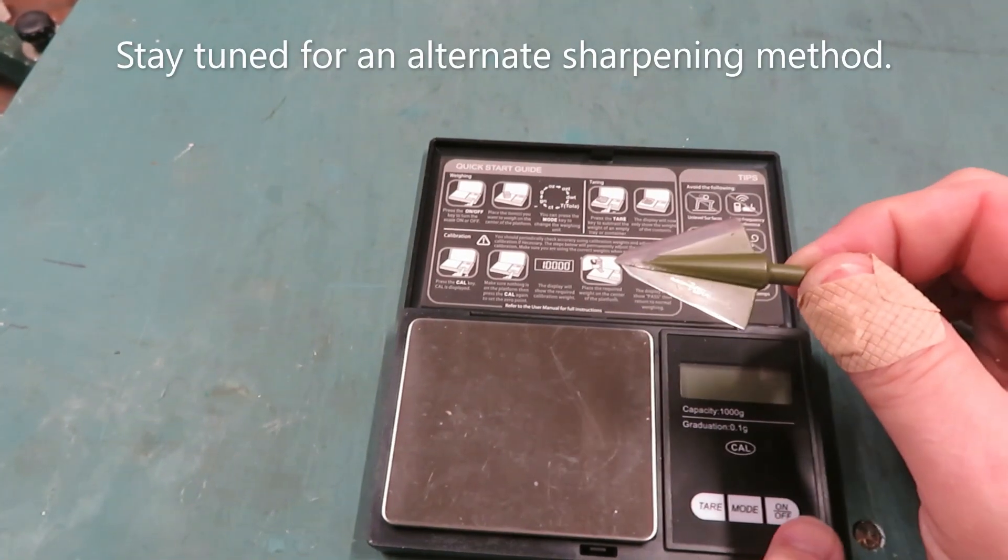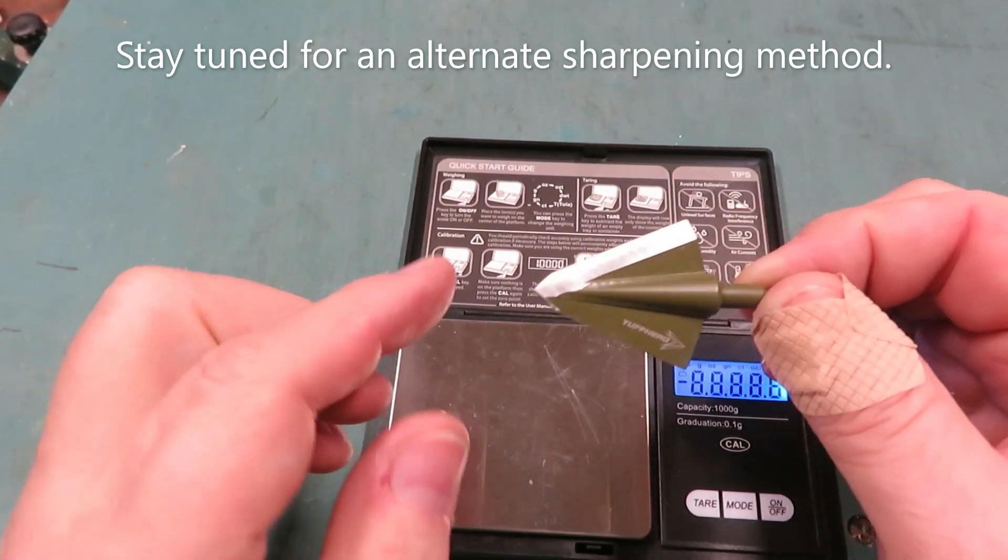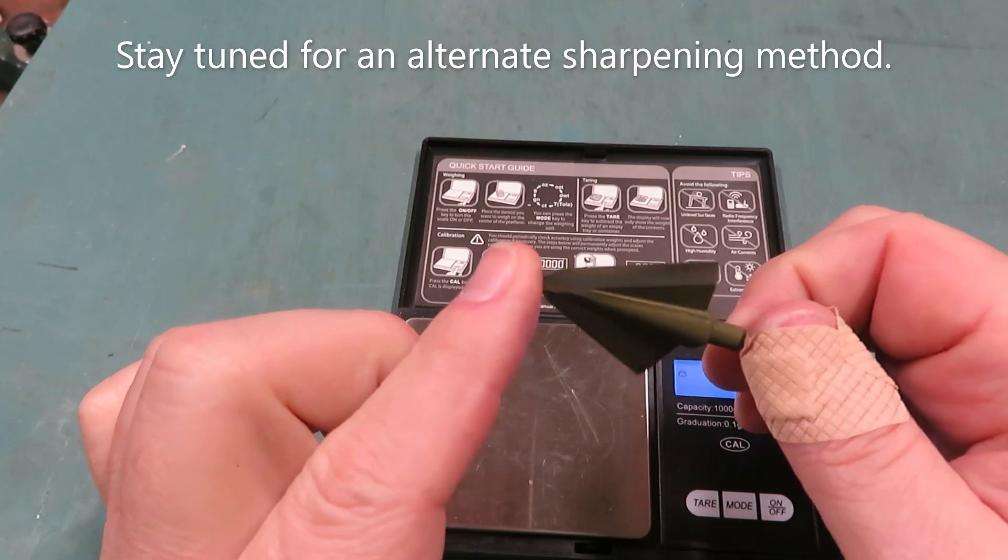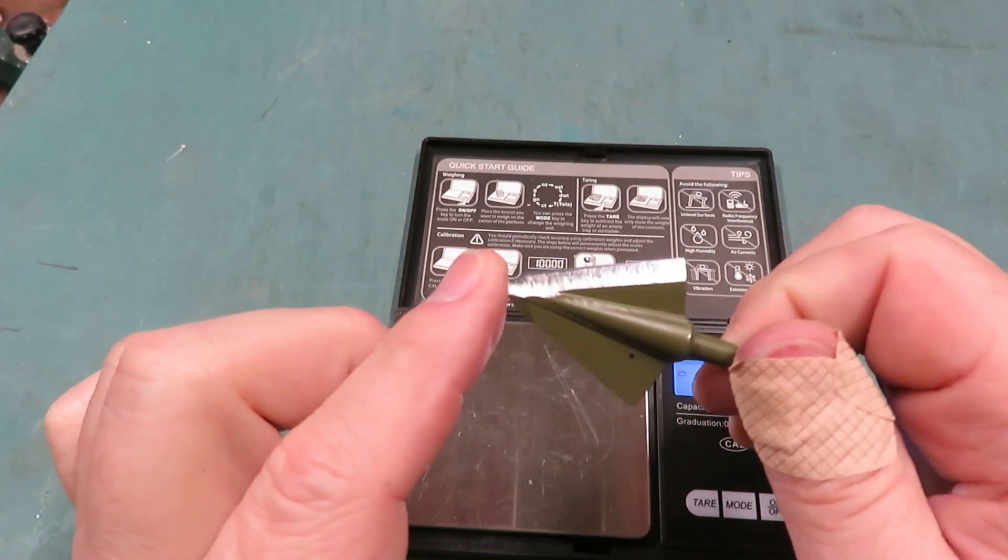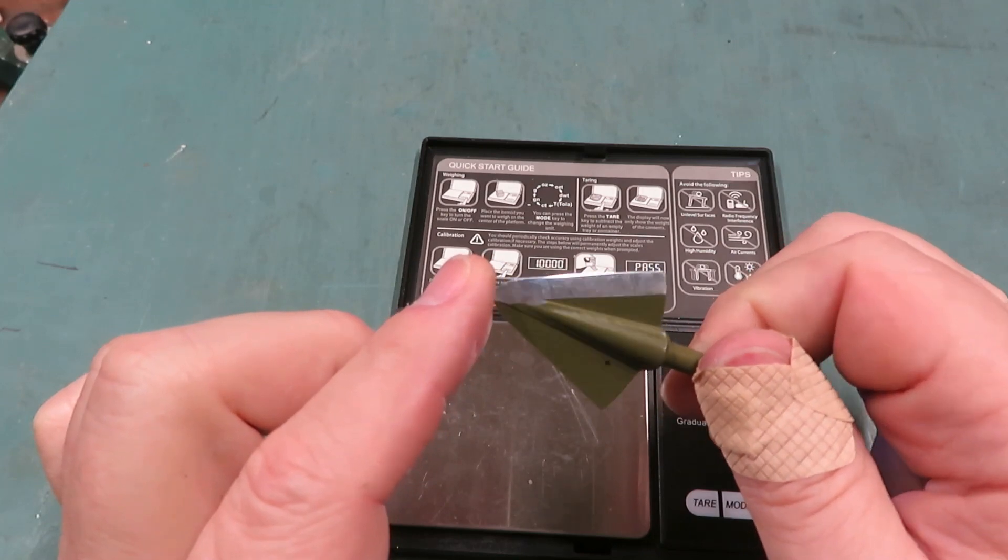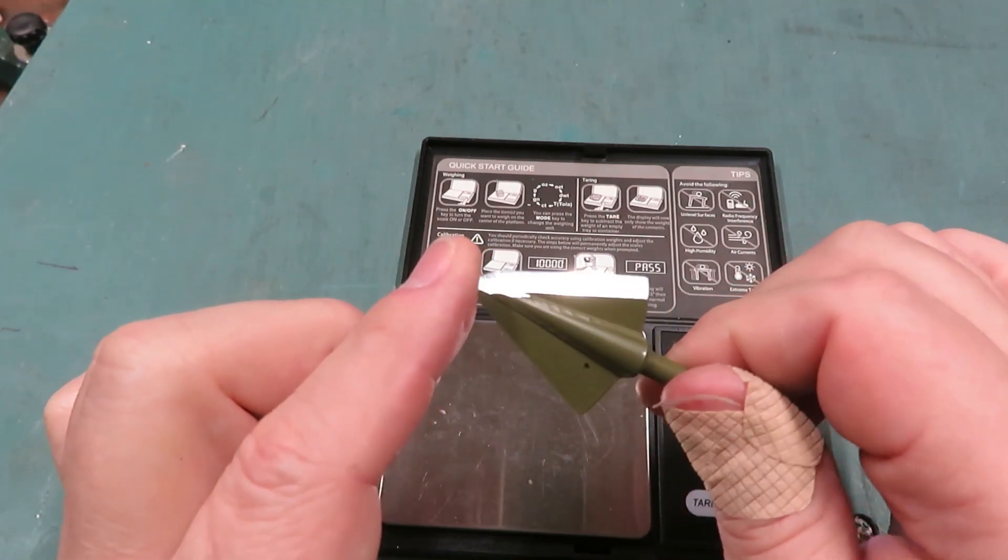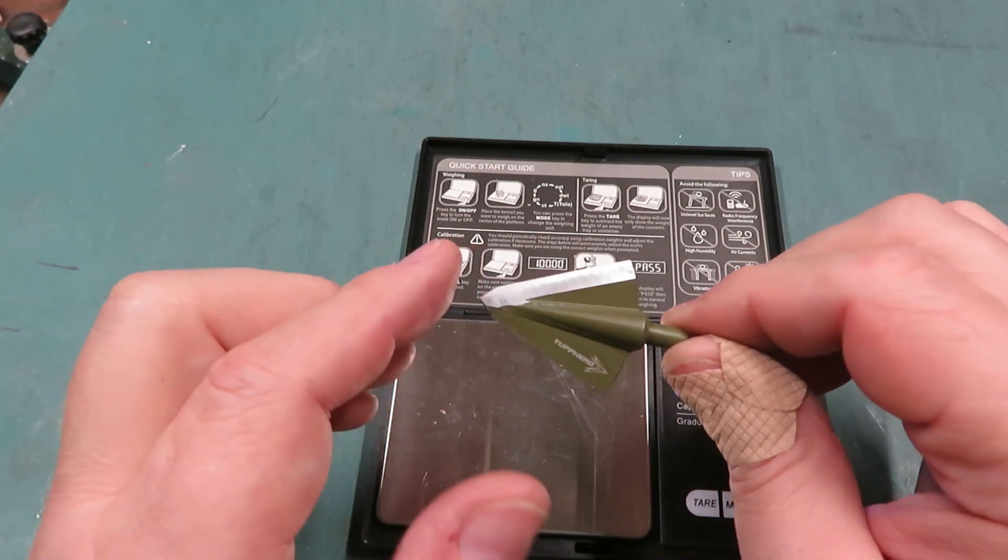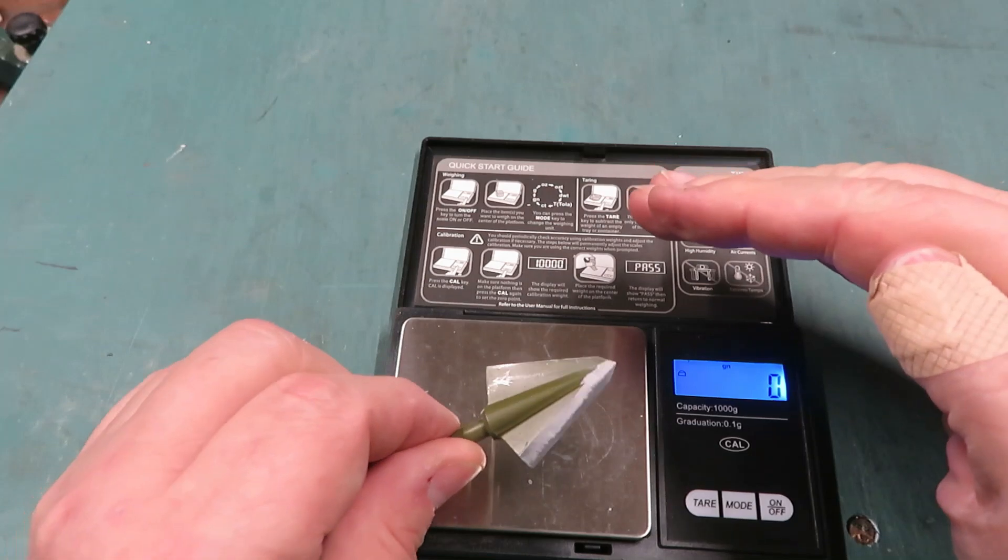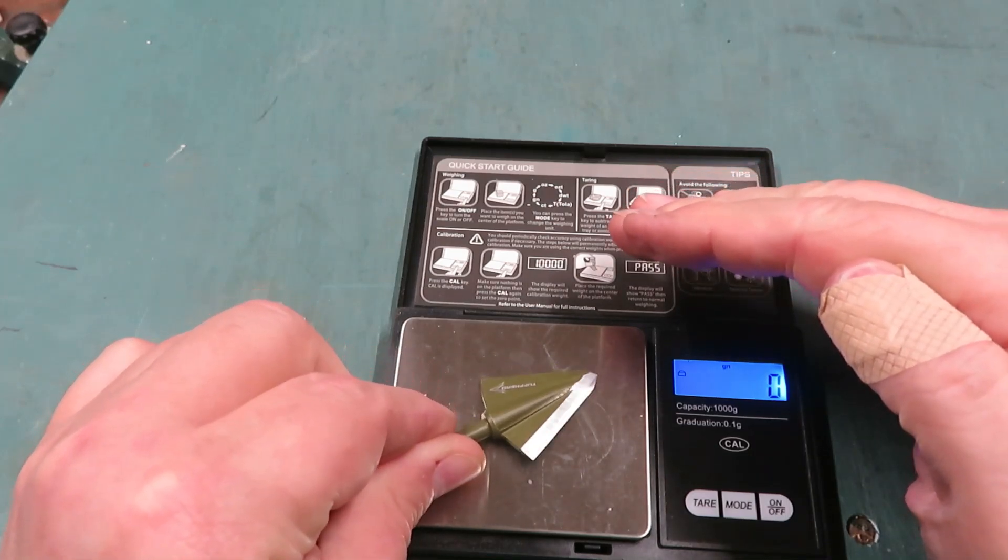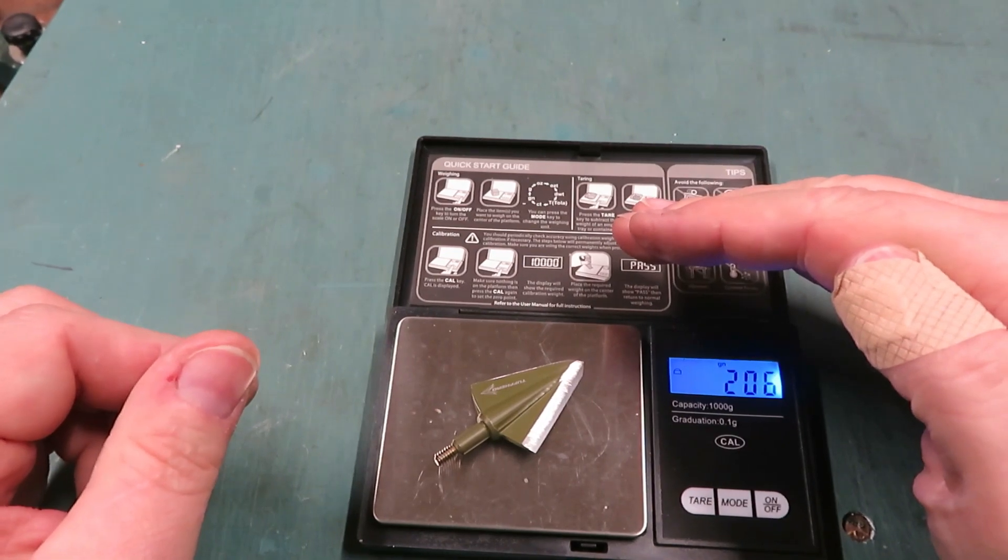As always the last step is to check the weight. I don't expect this to change at all since I had to remove so little material. I really was essentially going from 2500 grit to buffing compound and spending a lot of time buffing that edge to see if I could get it sharper. It started at 206. Let's see what it finishes at. Yep, 206. So it stayed the same which I expected.